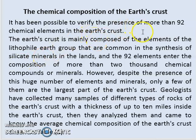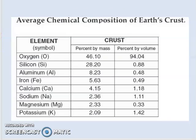Regarding the chemical composition of the earth's crust: as you know, there are 92 chemical elements in the earth's crust. Only 8 of these elements, in the form of ions, make up around 98% of the earth's crust. These 8 elements are oxygen, silicon, aluminum, iron, calcium, sodium, potassium, and magnesium.